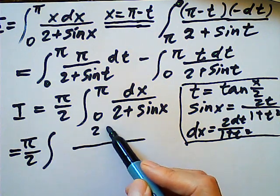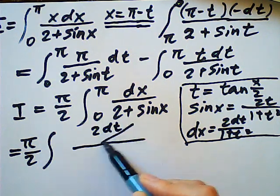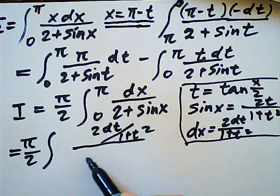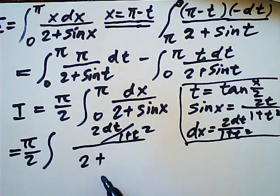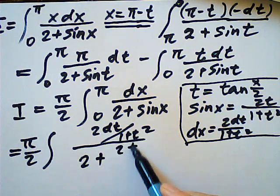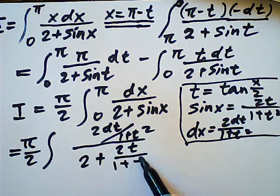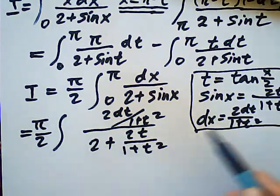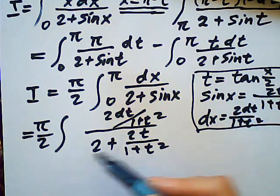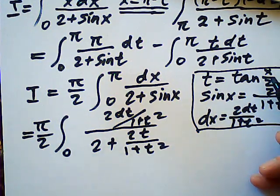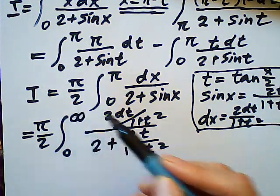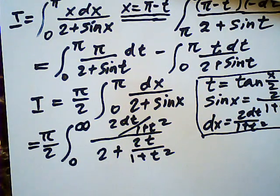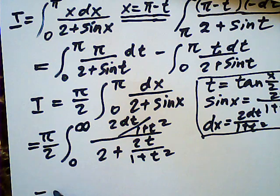dx will be two dt over one plus t square. This is two t over one plus t square. And the boundary has been changed. When x equals zero to zero, when x equal to pi, it's infinity.